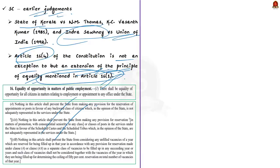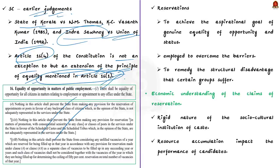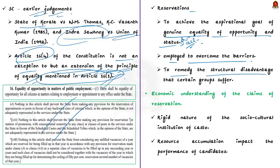The judgment states that reservations are crucial to achieve the goal of genuine equality of opportunity and status amongst all citizens, and that reservation is one of the measures employed to overcome those barriers. Individual differences may be a result of privilege, fortune, or circumstances, but this cannot be used to negate the role of reservation in remedying the structural disadvantage that certain groups suffer.